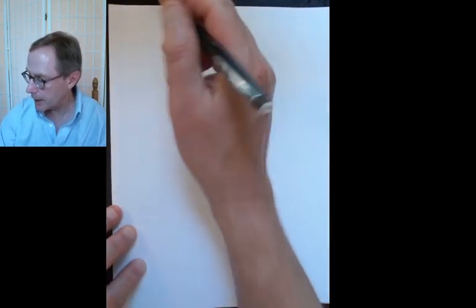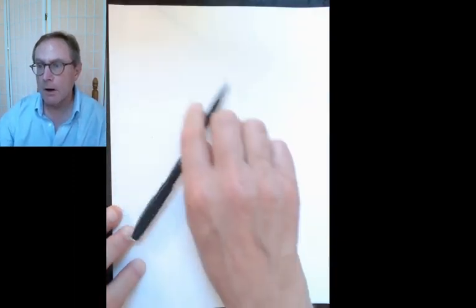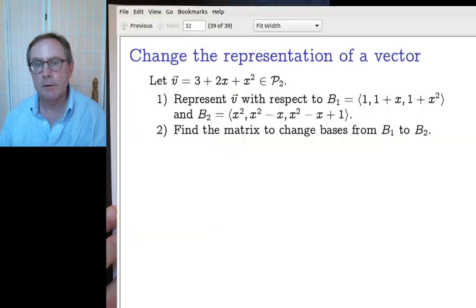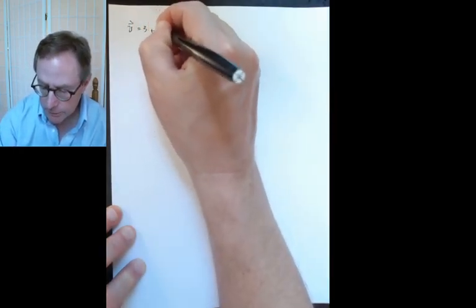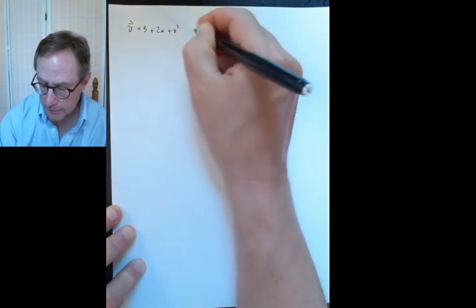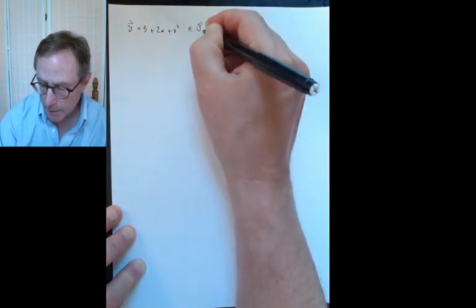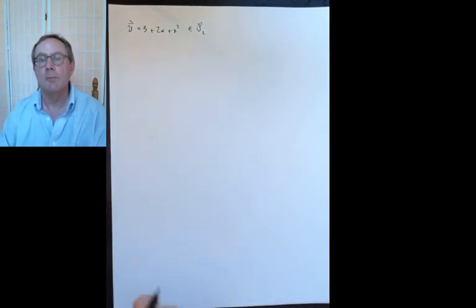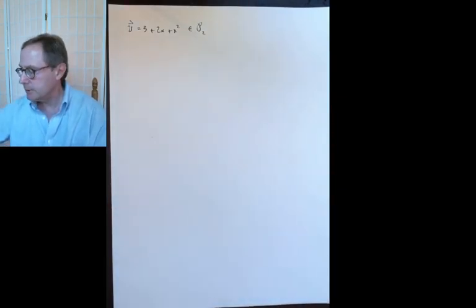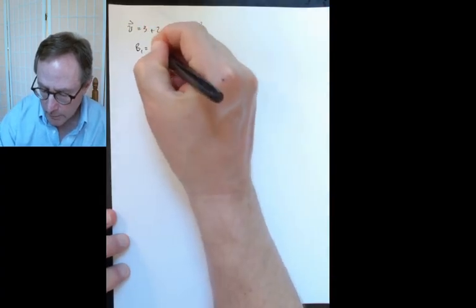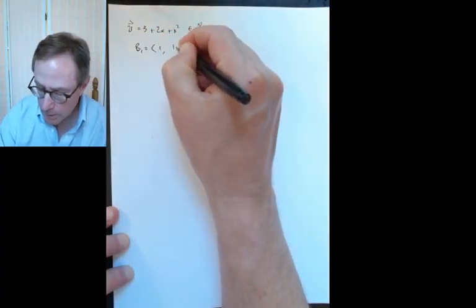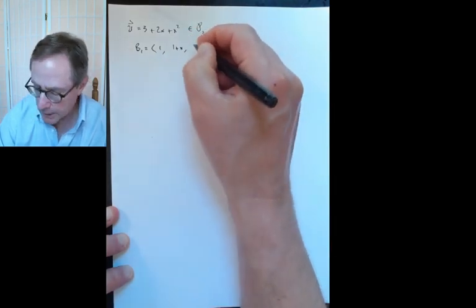I'm going to do an example that involves 3 plus 2x plus x squared. So V is 3 plus 2x plus x squared — coordinates (3, 2, 1) — and it's a member of the space of quadratic polynomials. And B1 is: 1, 1 plus x, 1 plus x squared.